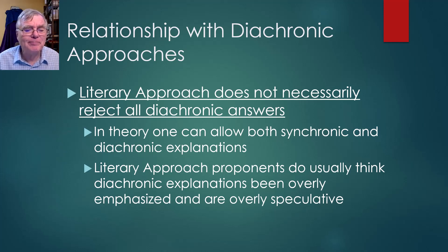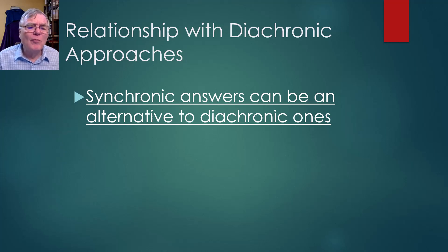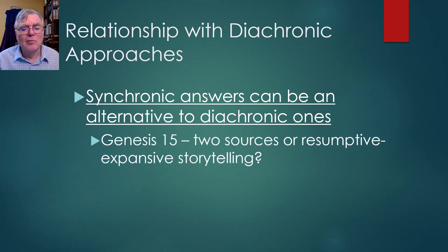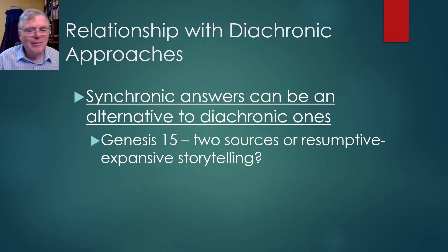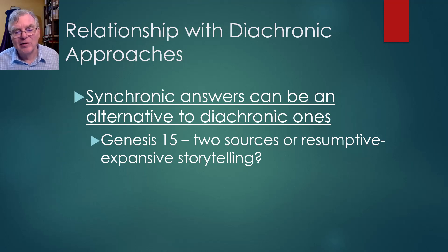They're not entirely wrong in that regard. Moreover, synchronic answers can be alternatives to diachronic answers. For example, in Genesis 15 you have what looks like two accounts of how the covenant was being made with Abraham. That could be seen as two sources, though it could be given a purely synchronic explanation using a literary technique known as synoptic resumptive expansive storytelling — telling a story once and then going back to tell it again from a different perspective — rather than saying the two parts are entirely different sources.